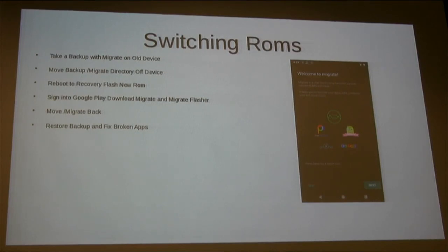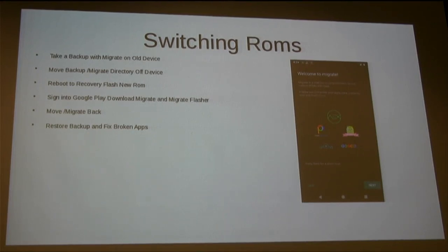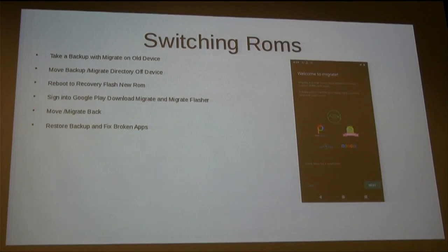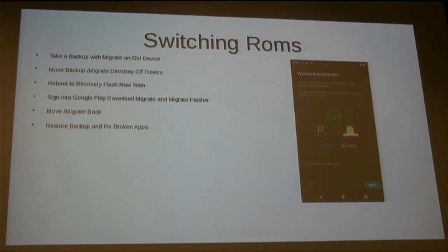So, switching ROMs — how do you actually switch to a different custom ROM or upgrade to a newer Android version? The procedure is mostly: you download Migrate from the Play Store and you download Migrate Flasher. These are two apps which automate the backup process. You take a backup with Migrate, and once that's completed, you move the backup off your device to a USB or your computer. Then you flash your new ROM, and then sign in to Google Play or download the APKs for Migrate, and from there you restore all your apps.